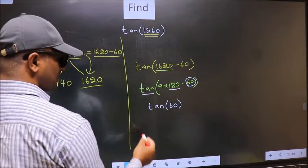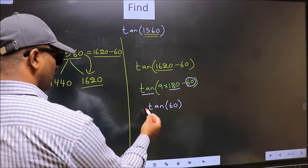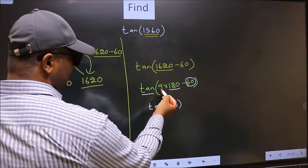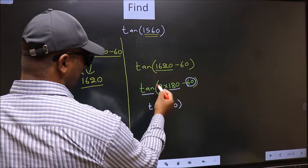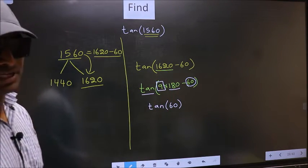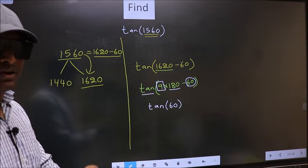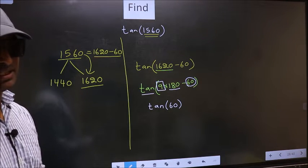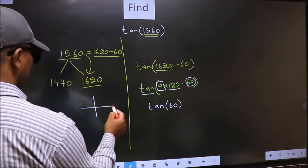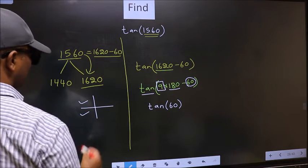Now the question is, will we get here plus or minus? To answer that, we should look at the number before 180. That is 9. And 9 is odd. And all the odd multiples of 180, they lie either in the second or in the third quadrant.